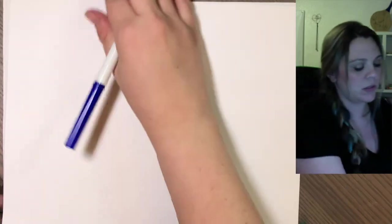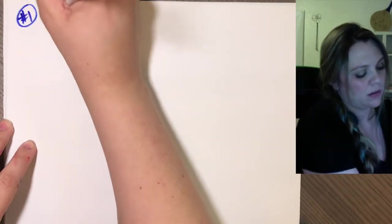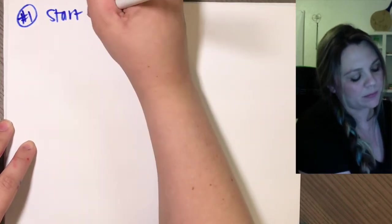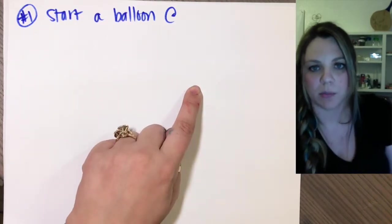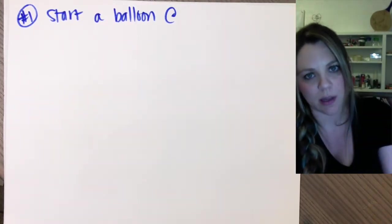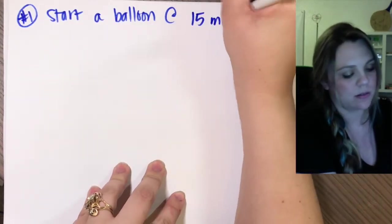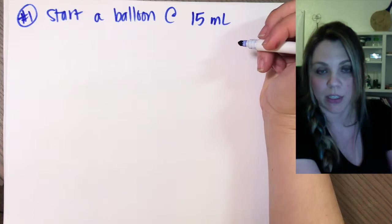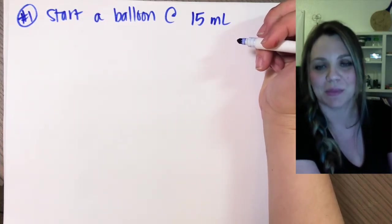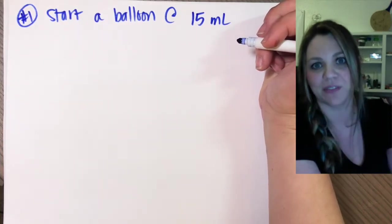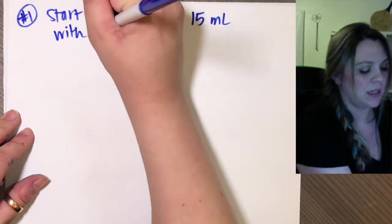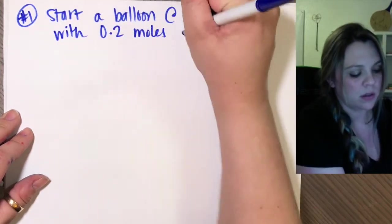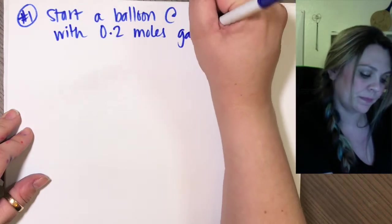One example and we're done. So if you start blowing up a balloon, and initially your balloon is not like completely empty of any air, right? There's still some air in there. So that air has 15 mils of actual air. That balloon has 15 mils of air within that flat balloon, the unblown up balloon. And it has 0.2 moles of gas.